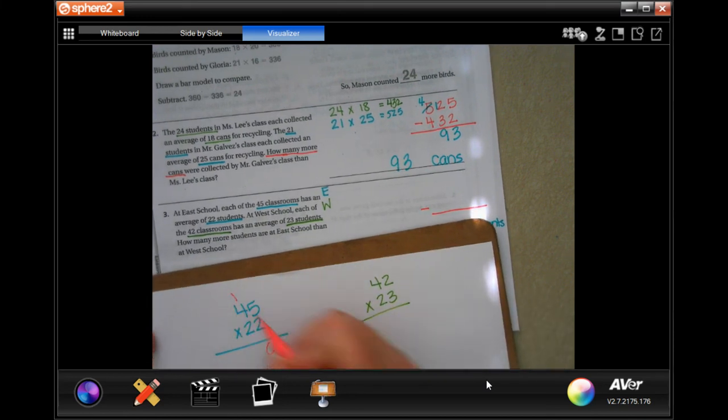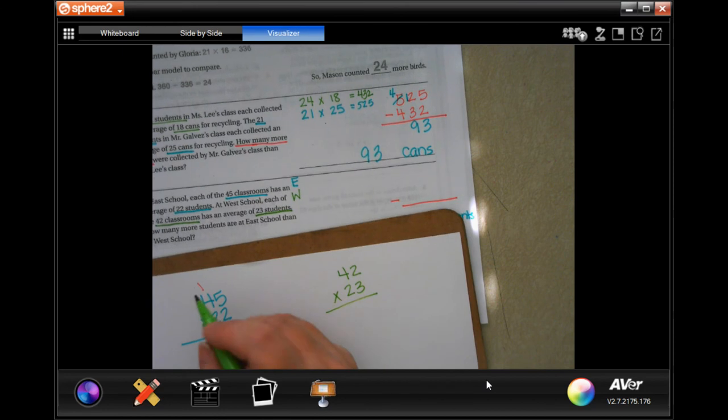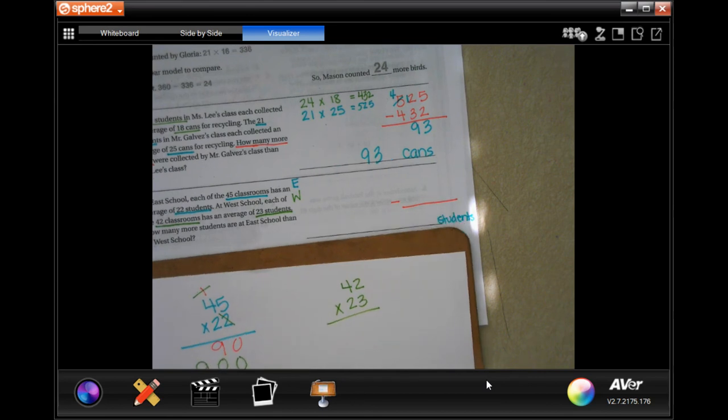2 times 5 is 10. Carry that 1. 2 times 4 is 8, plus 1 more is 9. Now, tic-tac-toe. This is the same number as that, so it's still going to be 90. We just add a 0 behind it. Add them up, 990.